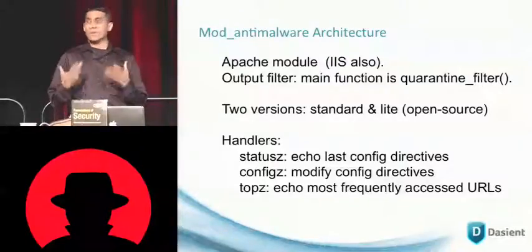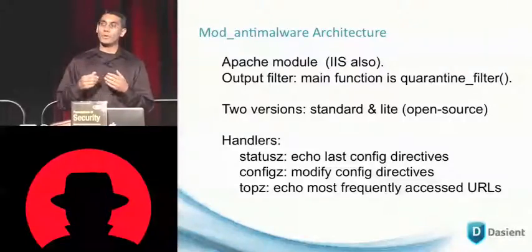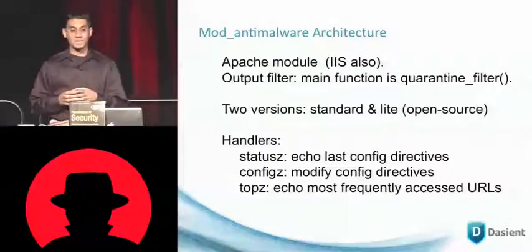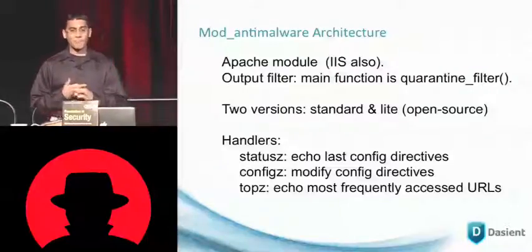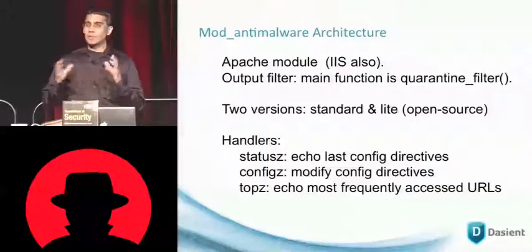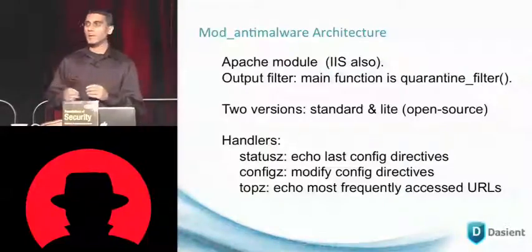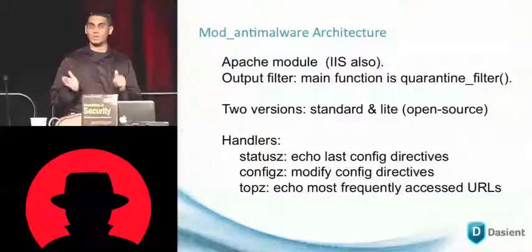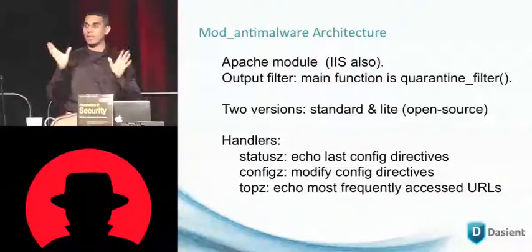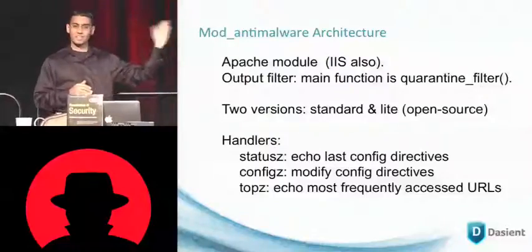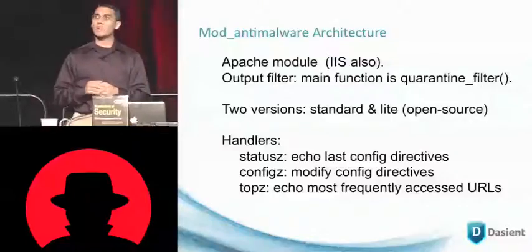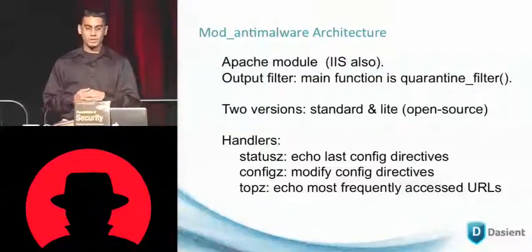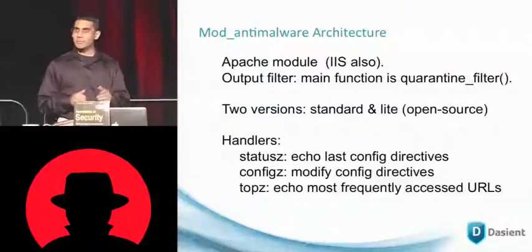Or you can come to dacient.com and download the mod anti-malware light module. When you download it from dacient.com and sign up, we'll also provide some free trial malware monitoring for the website you're using to try out mod anti-malware light. In terms of mod anti-malware's architecture, there are a couple of key things that characterize its operation. The first is a set of handlers the module supports — a handler is a URL at the domain. There are three handlers: status_c, config_c, and top_c. The second thing is the set of configuration directives it supports.